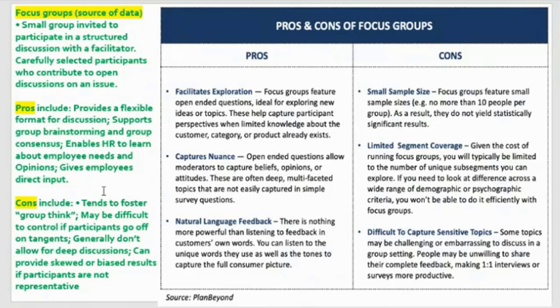The disadvantages of focus groups is it tends to foster groupthink, where everyone wants to think the same, speak the same, and not want to be the outlier or the one saying something divergent or different from what every other person has said. It may be difficult to control a focus group if participants go off on tangents. It generally does not allow for deep discussions, and it can provide skewed or biased results if participants are not representative of the population.